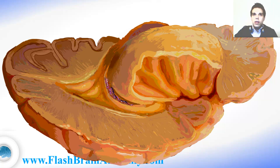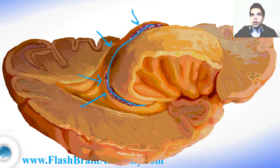I also illustrated the choroid plexus. It is made of slightly modified ependymal cells and it creates the cerebrospinal fluid. It goes all the way from the inferior horn of the lateral ventricle, over the cella media, and to the anterior horn of the lateral ventricle, where it passes through the interventricular foramen of Monro into the third ventricle.